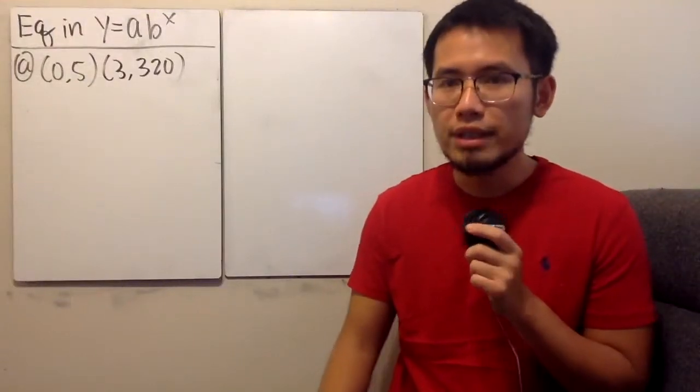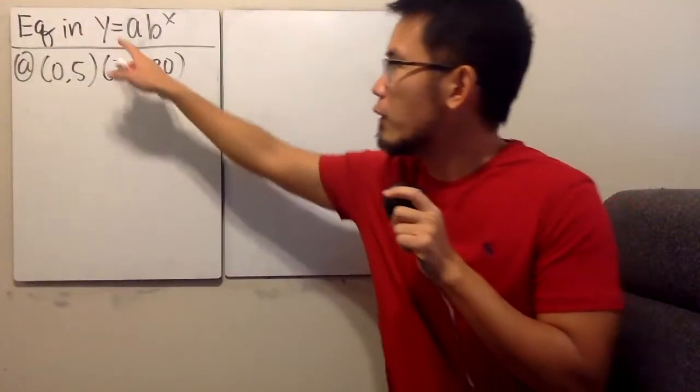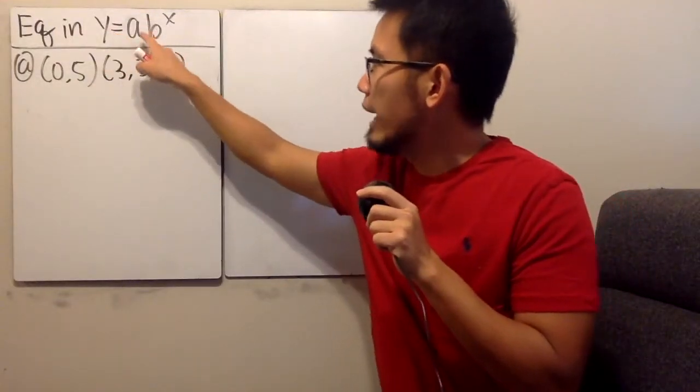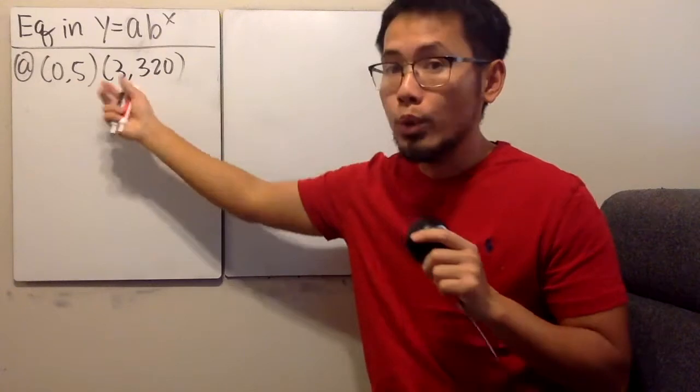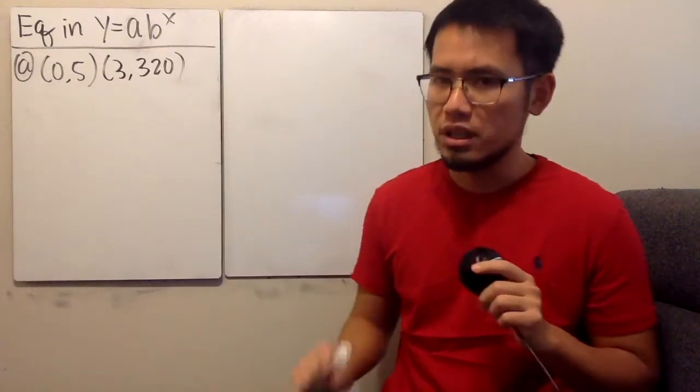In this video, we are going to write the equation in the form y equals a times b to the x power when we are given two points.